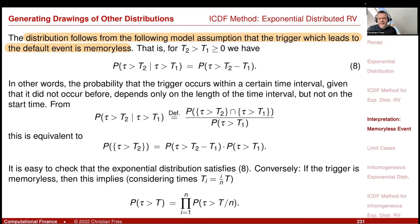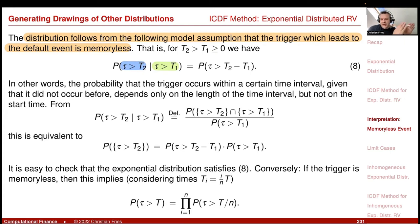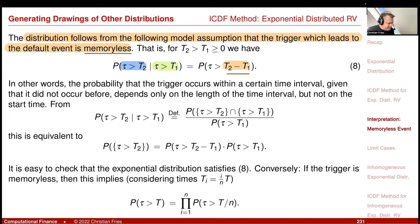This distribution follows from a very simple and intuitive model assumption: the trigger leading to the default event is memoryless. If you have survived time t₁ (τ > t₁), then the conditional probability of surviving t₂ depends only on the length of the interval t₂ − t₁. The past doesn't matter — it is memoryless. This memoryless property then implies τ has the exponential distribution.